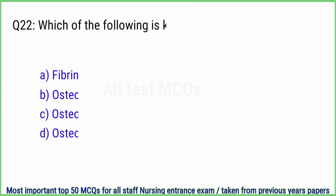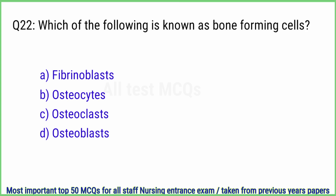Q22. Which of the following is known as bone-forming cells? The right answer is option D, osteoblasts.